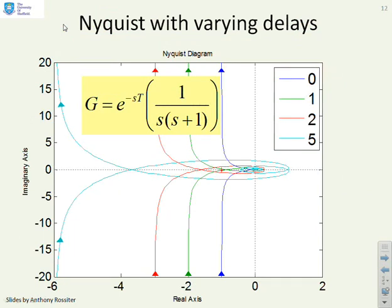Here's an example then. You'll see I've given a G, e to the minus sT, 1 over (s+1). I've said these numbers here are T. We'll try T equals 0, T equals 1, T equals 2, T equals 5. We start with T equals 0, no delay. Here's the original Nyquist diagram. Comes in smoothly to the origin.